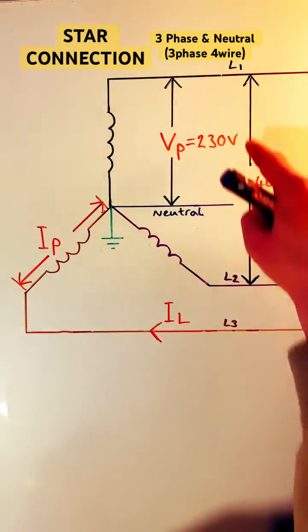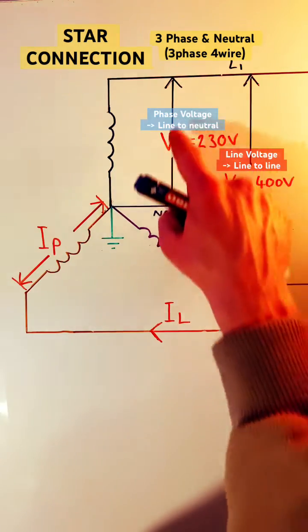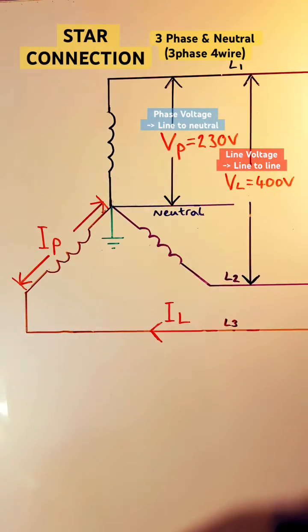Here's a star connection, three phase and neutral. The voltage between two phases is the line voltage, VL, and the voltage between neutral and one of the phases is VP, the phase voltage.